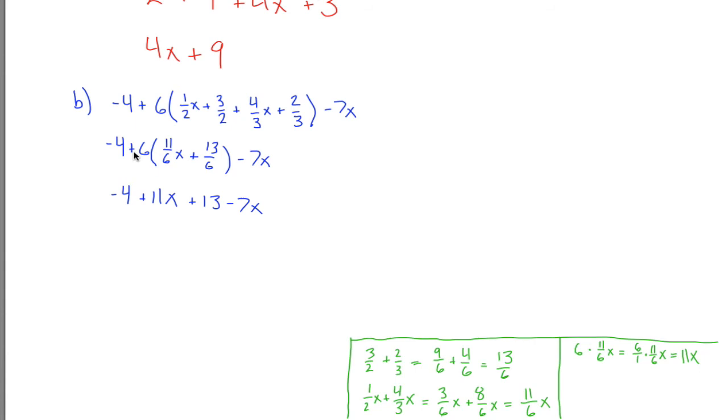Sort of the same idea if I take this 6 times this 13 sixths. You think about the 6 as 6 over 1 and then cancel out these two sixths and be left with 13. So that's how I got from this step down to this step.